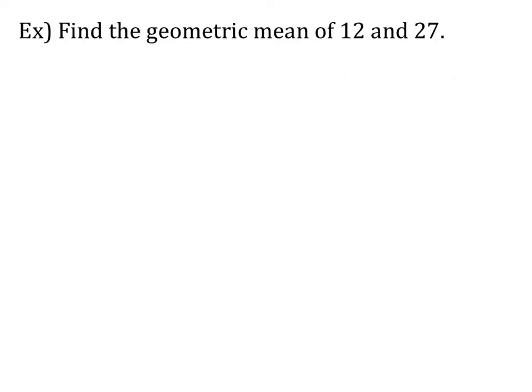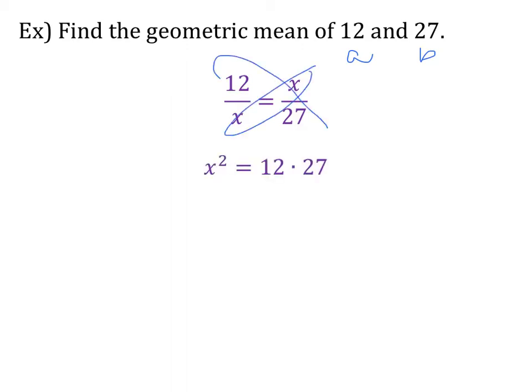Now let's try an example. Find the geometric mean of 12 and 27. So 12 and 27are going to be our a and b, so I'm going to set up my relationship: 12 over x equals x over 27. I'm going to cross multiply, and I'll have x squared equals 12 times 27. I'm going to take the square root of both sides, so the square root of x squared is equal to the square root of 324, and so x is equal to 18.